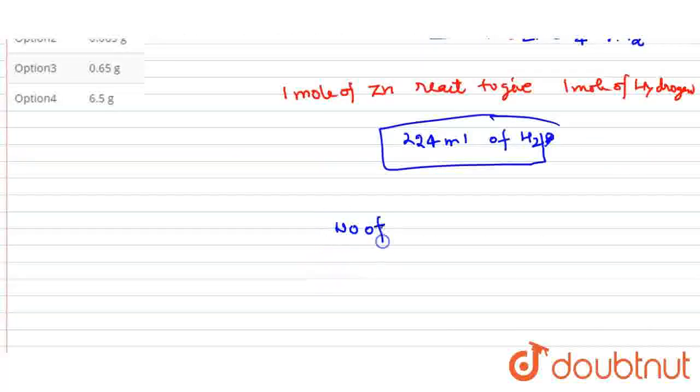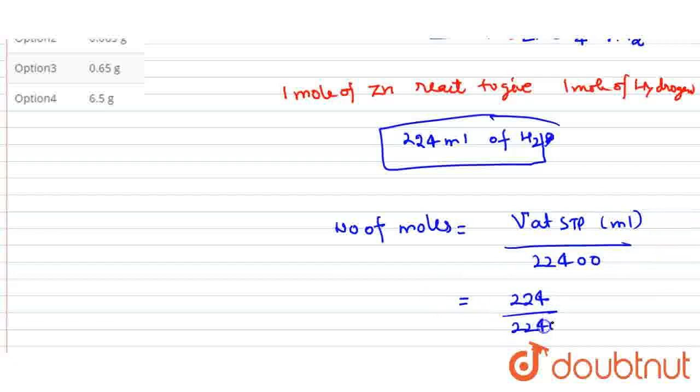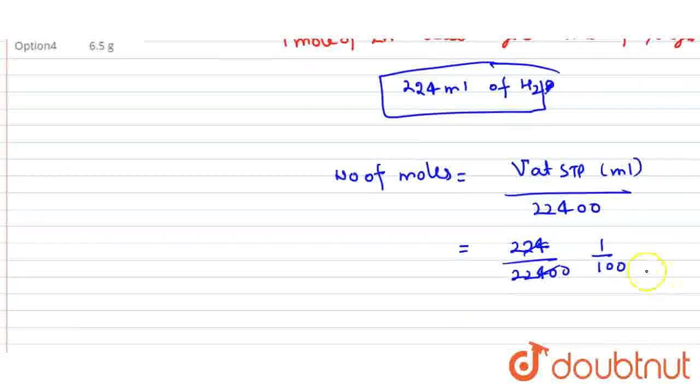What is the formula? Volume at STP. We can find number of moles from volume at STP. Because we are given 224 ml. So here the number of moles is 224 divided by 22400, which equals 1 upon 100 moles.